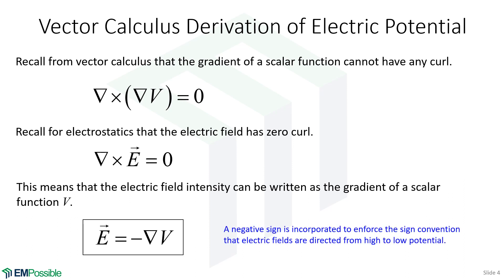To finish this equation, we put a negative sign in front. Even though that negative sign didn't fall out of this derivation, it's there simply to enforce our sign convention, where the electric field always points from high potential to low potential.